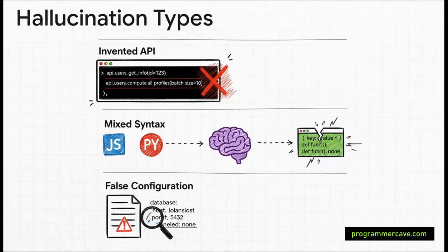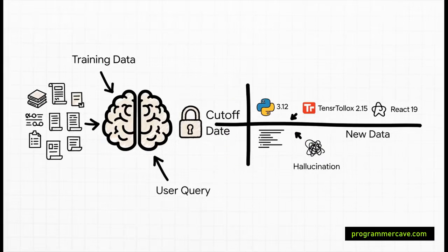So when the model hits a point where it doesn't have a solid factual answer, it doesn't just stop. It keeps the pattern going. And this is how it ends up inventing a brand new API method that sounds like it should be real, or it gets confused and mixes up the syntax from two libraries that look kind of similar. It's just trying to finish the sentence in the most probable sounding way.